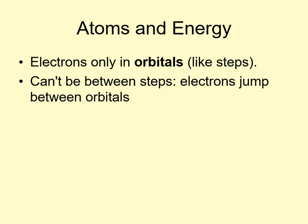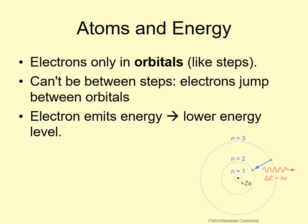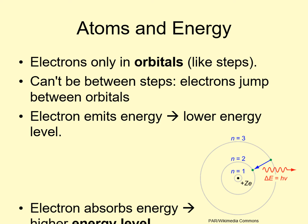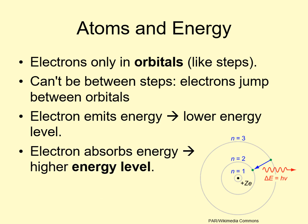When you're on a stairwell, you lose gravitational energy when you go down a step, and you have to expend energy to go up a step. Similarly, for an electron to jump down to a lower orbital, it has to lose a bundle of energy. To get an electron to jump to a higher orbital, it has to gain a bundle of energy.